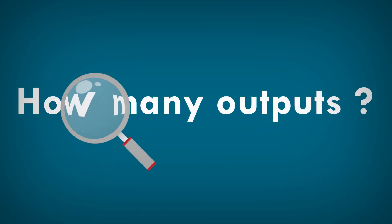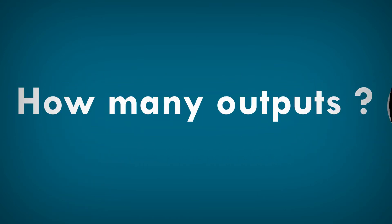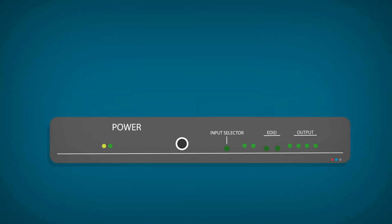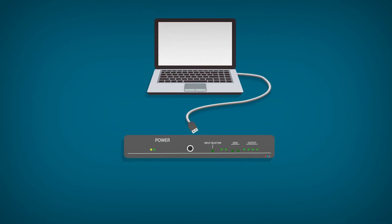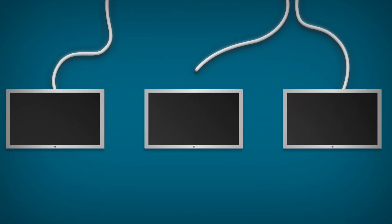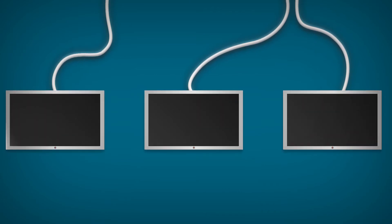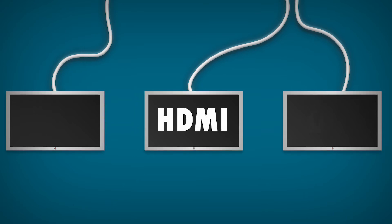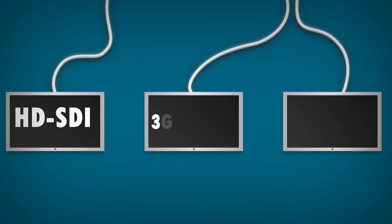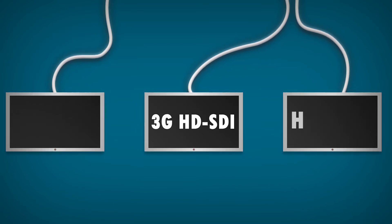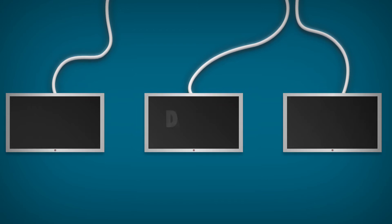Second, how many outputs are required? If you need to transmit to three screens, you require a distribution amplifier with at least three outputs. Next, verify your media type. Output signals can be transmitted across many media types, such as HDMI, DVI, HD-SDI, 3G HD-SDI, HDBaseT, DGCAT, and audio.